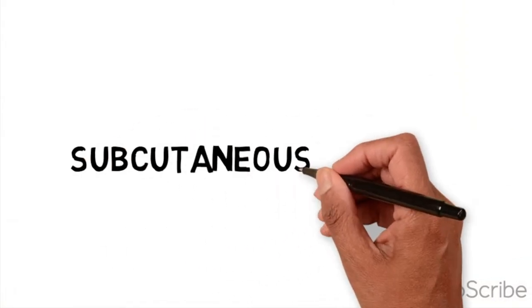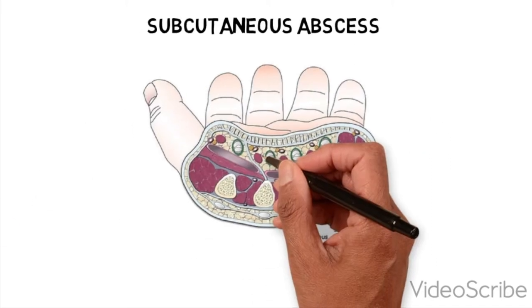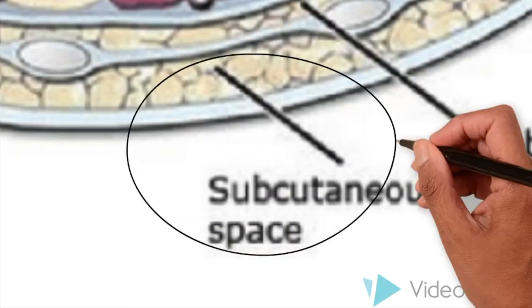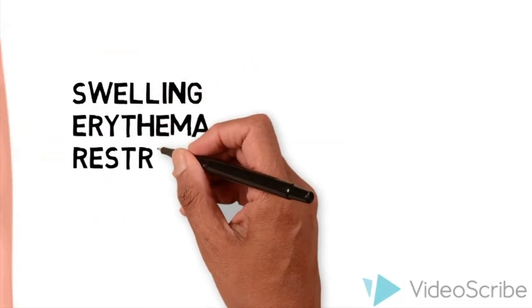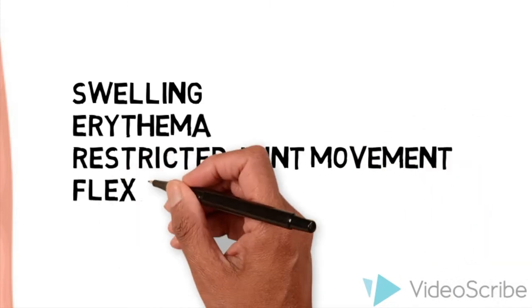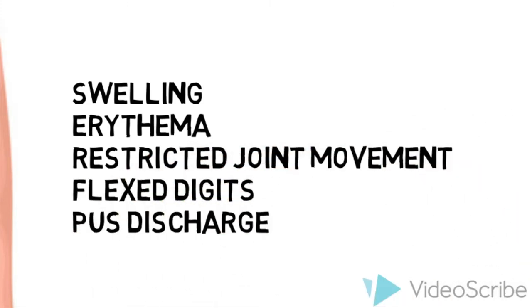Subcutaneous abscess is an infection anywhere in the subcutaneous tissue of the hand. Symptoms depend on where it presents. In the finger, one may have hand swelling, erythema, restricted motion at the joints, the digits may be in a flexed posture, and there might be possible pus discharge.